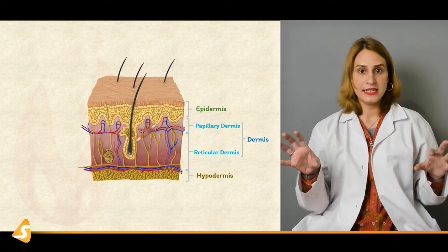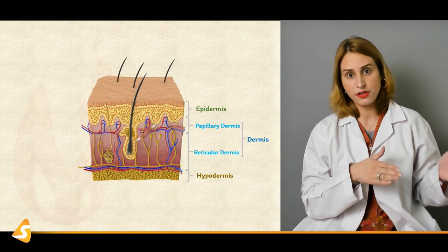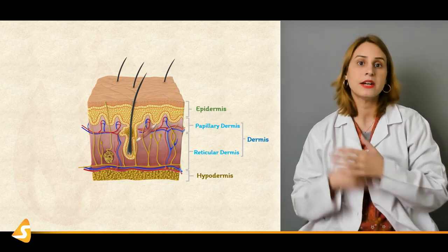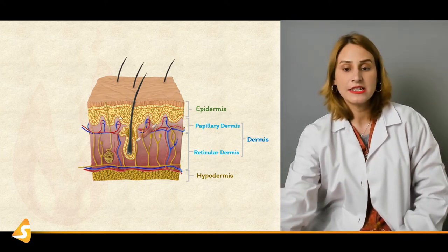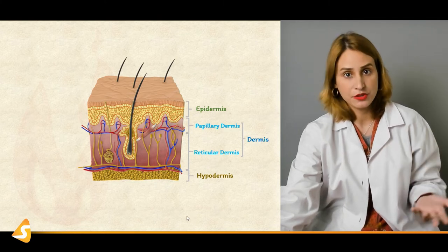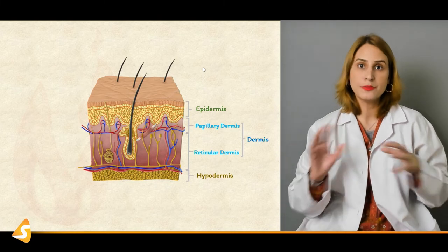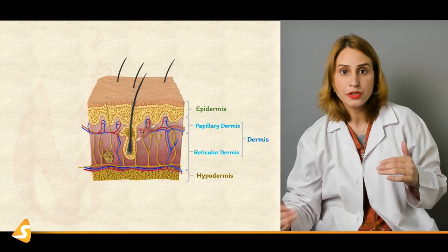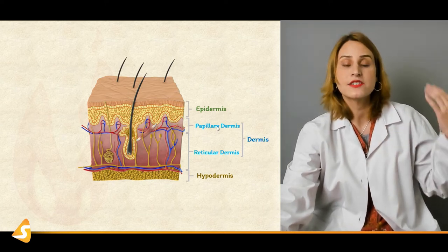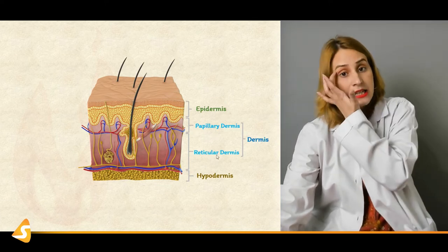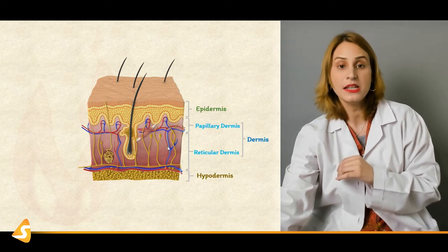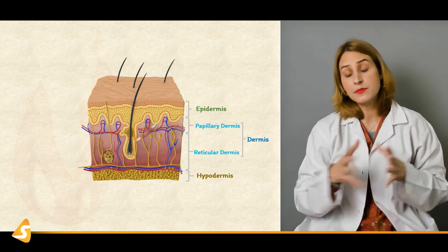Broadly categorizing: if there is involvement of the epidermis only, that would be a superficial burn confined to the epidermis. But if there is involvement of the dermis as well, that would be a deep thickness burn. In this diagram, we have three different layers of the skin: epidermis, dermis, and hypodermis. A superficial partial thickness burn would involve the epidermis along with the papillary dermis — part of the dermis. The deep thickness burn comprises the epidermis as well as the reticular dermis, and full thickness burns comprise the hypodermis as well.